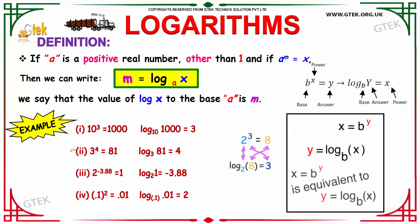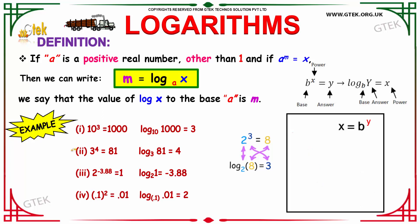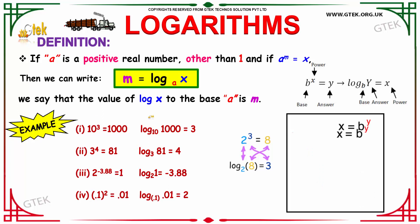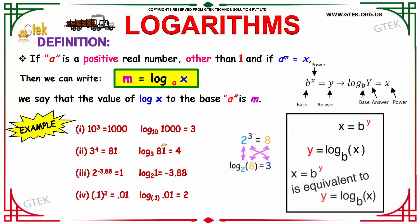Similarly, our second example is 3 to the power 4 is equal to 81. It can be written in logarithmic form as log 81 to the base 3 is equal to 4. That is, 3 should be raised to the power 4 to get your answer as 81.